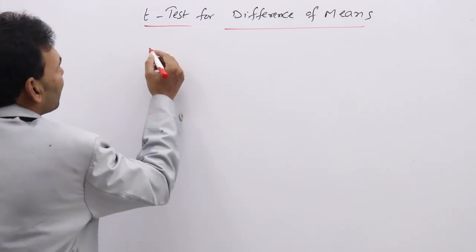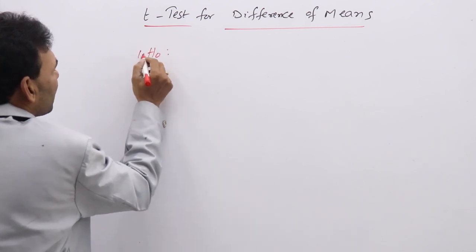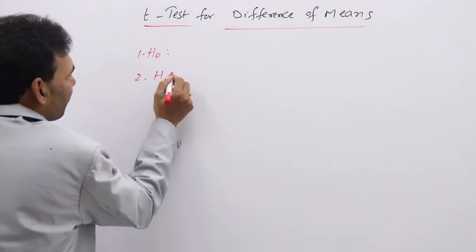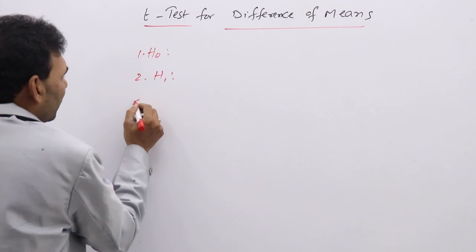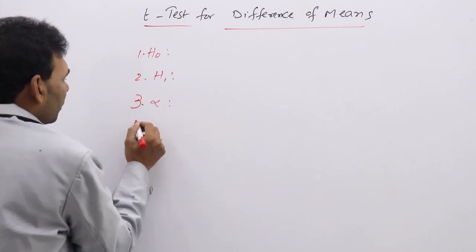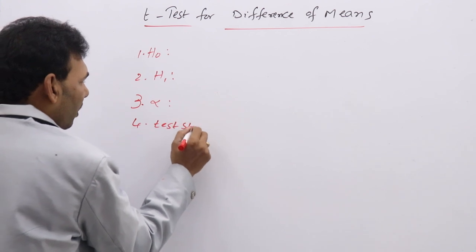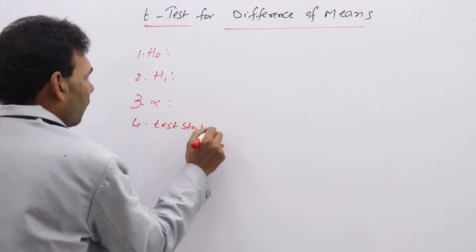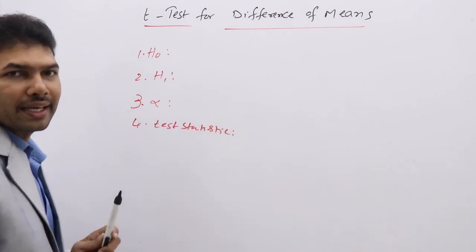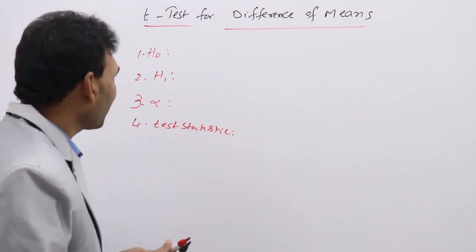For every test in the testing procedure, the first step is writing H0, the second step is writing H1, the third step is writing alpha, and the fourth is writing the test statistic formula for calculating the T calculated value.